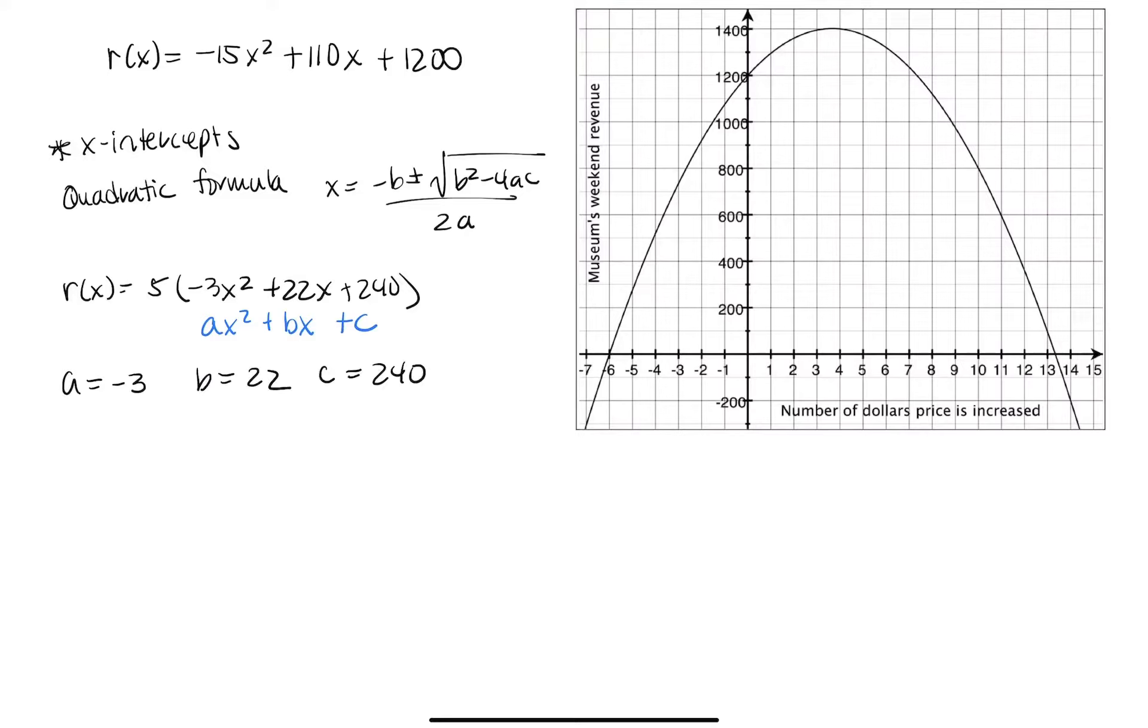So now I can go ahead and use the quadratic formula. x equals negative 22 plus or minus the square root of 22 squared minus 4 times negative 3 times 240. And all of this divided by 2 times negative 3.